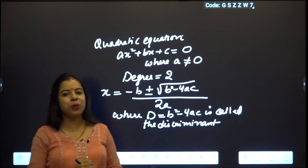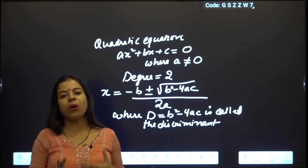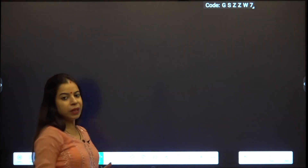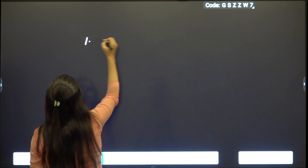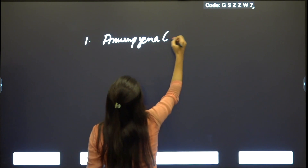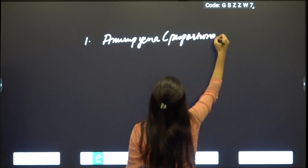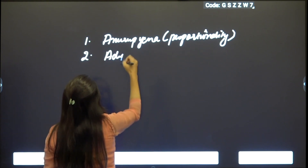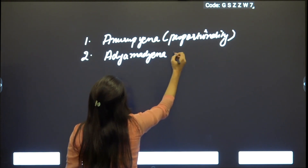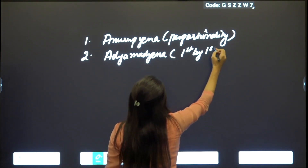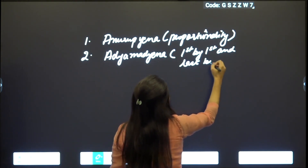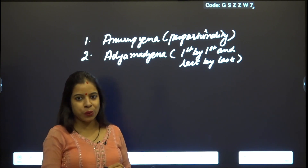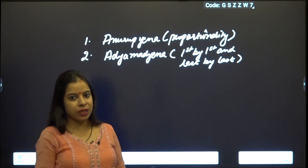Now my dear friends, I am going to tell you how to find the roots or factors of a quadratic equation with the help of Vedic mathematics. We are going to use two sutras: first is Anurupyena, which means proportionality, and second is Adyam Adyena, which means first by first and last by last. We are going to use the combination of both sutras for finding the factors.